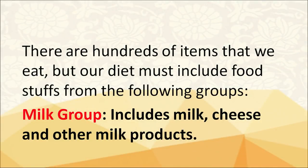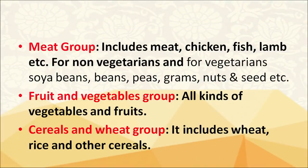Our diet must include food from the following groups: Number 1, the milk group, which includes milk, cheese and other milk products. Second, the meat group, which includes chicken, fish and lamb for non-vegetarians, and soya beans, beans, peas, grams, nuts and seeds for vegetarians. Third, the fruit and vegetable group, which includes all kinds of vegetables and fruits. Fourth, the cereals and wheat group, which includes wheat, rice and other cereals.